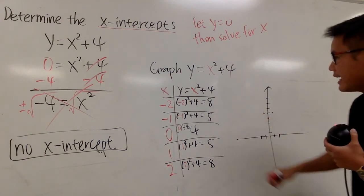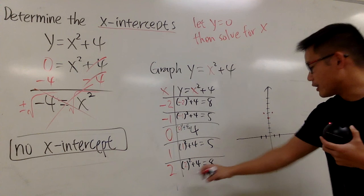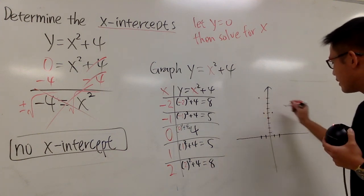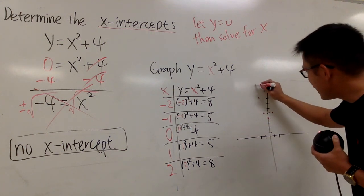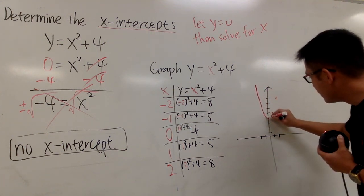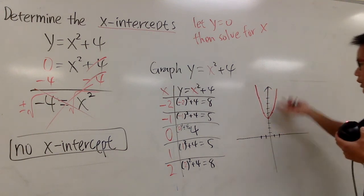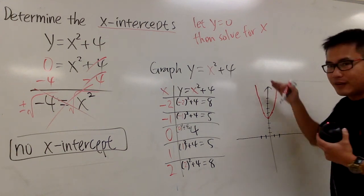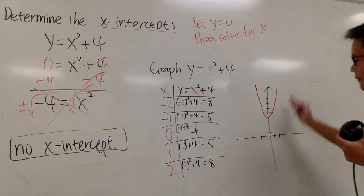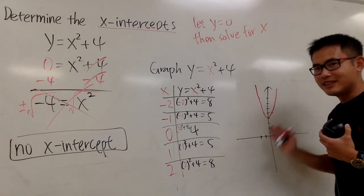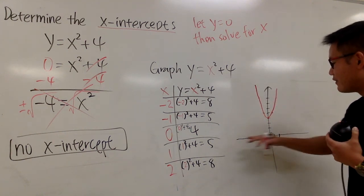Then (-2, 8) and (2, 8). As I told you, the graph opens up and is already above the x-axis, and it will never go down. It has no x-intercept because this curve never crosses the x-axis.